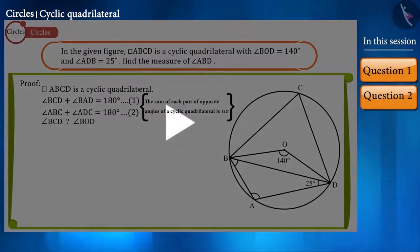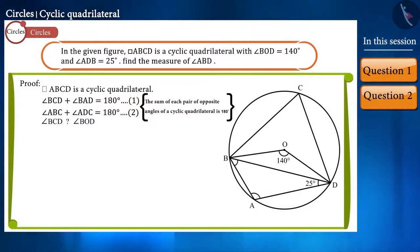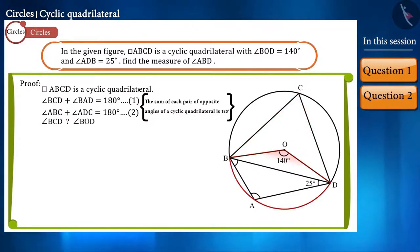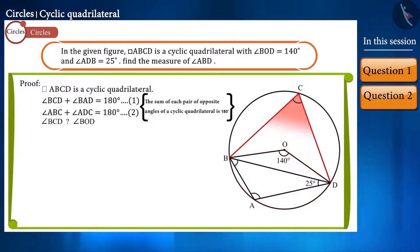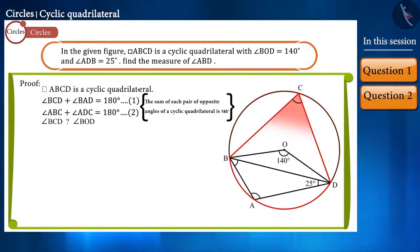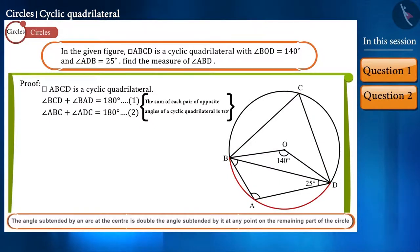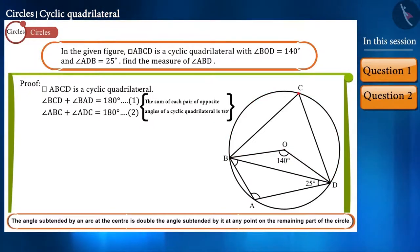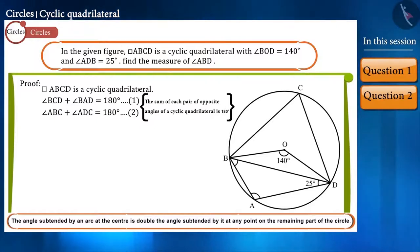Yes, friends — these two angles are subtended by the same arc BD. Angle BOD is the angle subtended at the center by arc BD, and angle BCD is subtended by arc BD at point C, located on the remainder of the circle. We know that the angle subtended by an arc at the center is twice the angle subtended at any point on the remaining part of the circle. So angle BOD equals twice angle BCD.